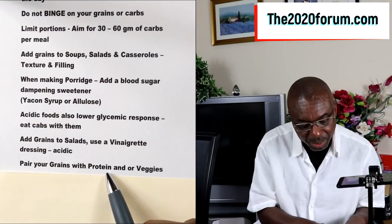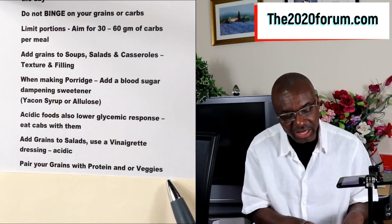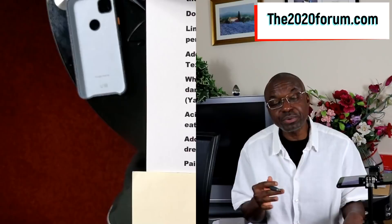The next tip — another favorite of mine — is that when eating grains, you want to pair them with protein or veggies. They will help slow down your blood sugar absorption. Something like Greek yogurt you want to have with your grains, or something like celery with your grains — all of those will help slow down the blood sugar absorption.